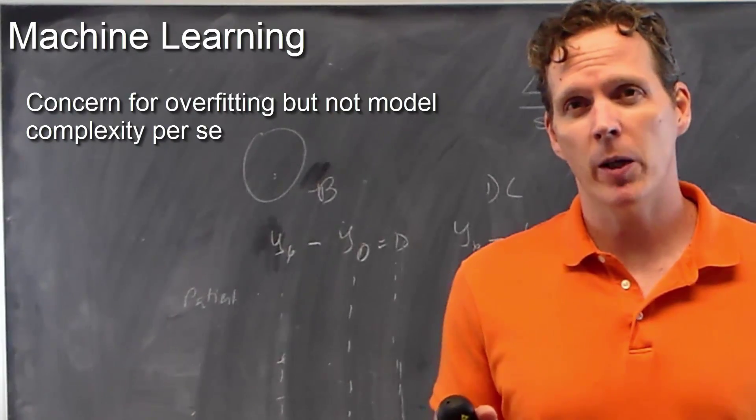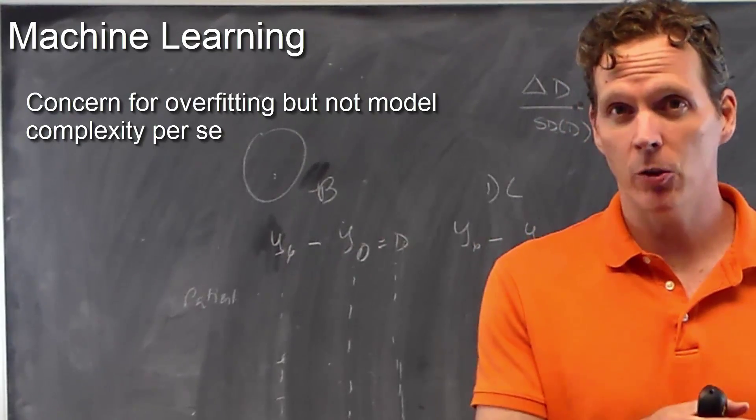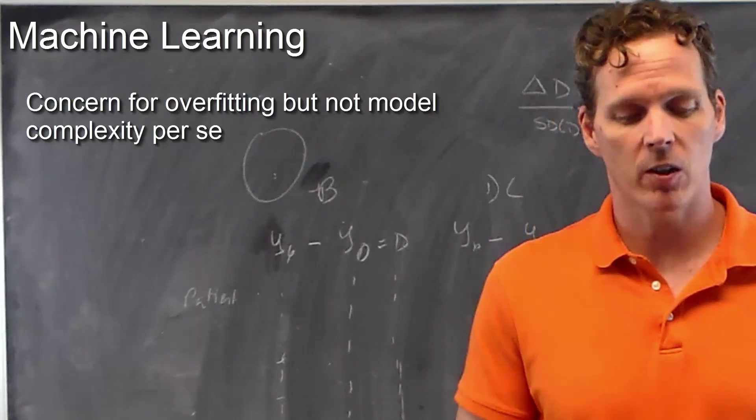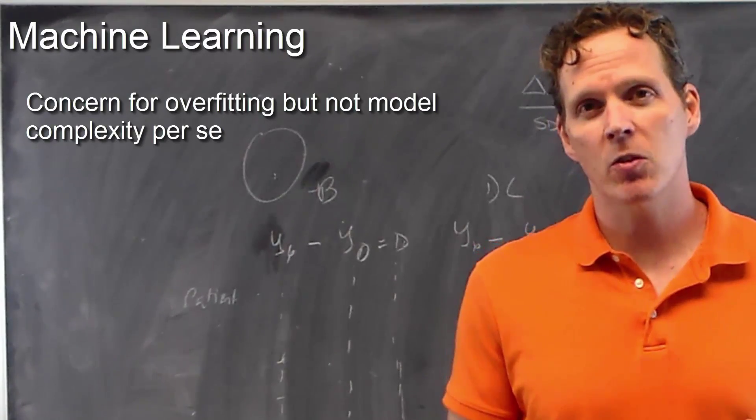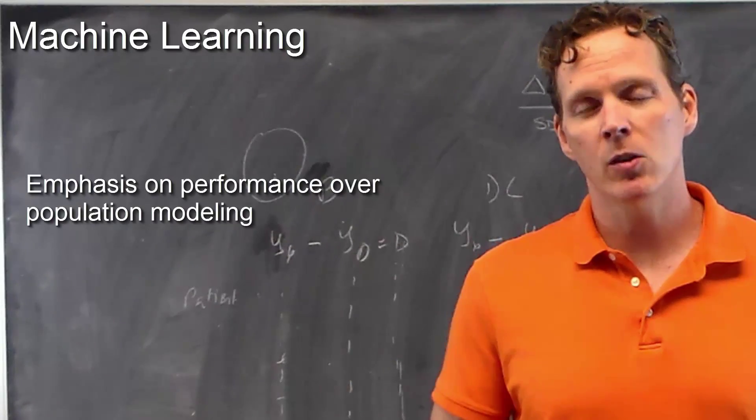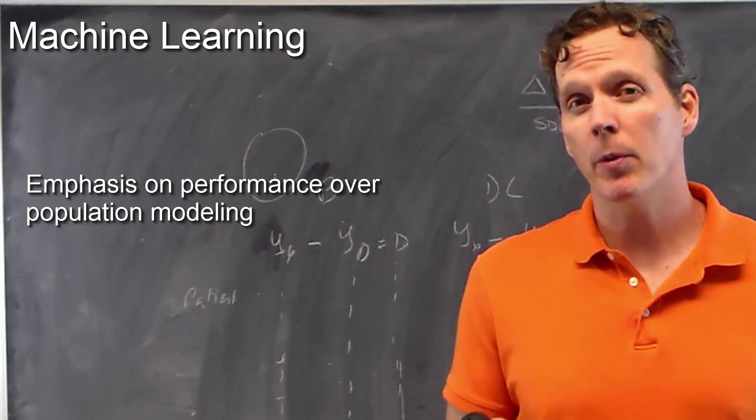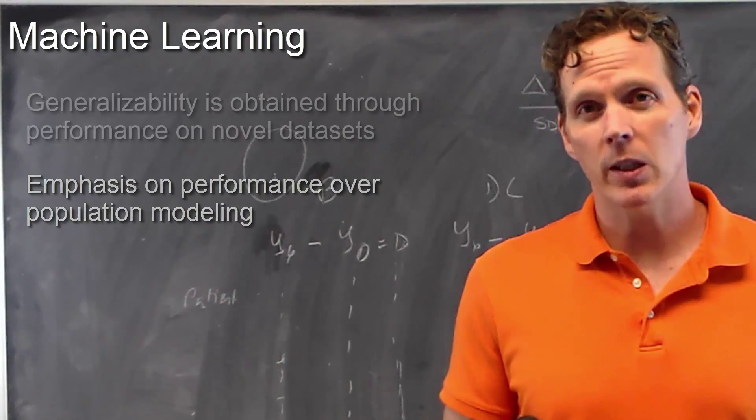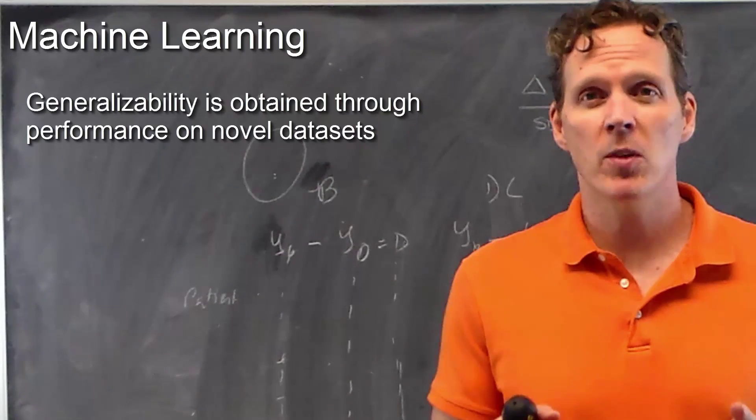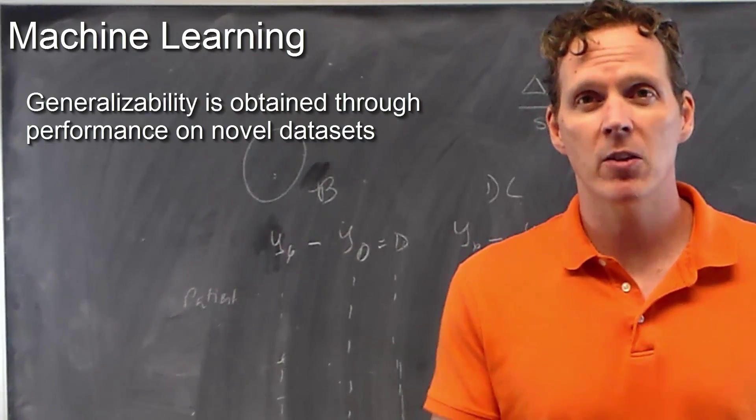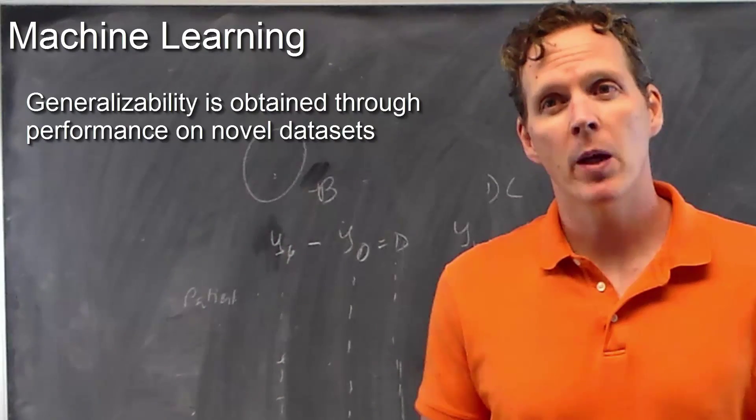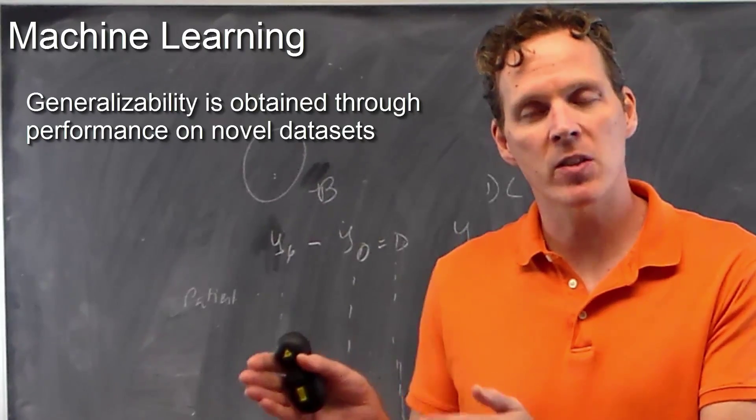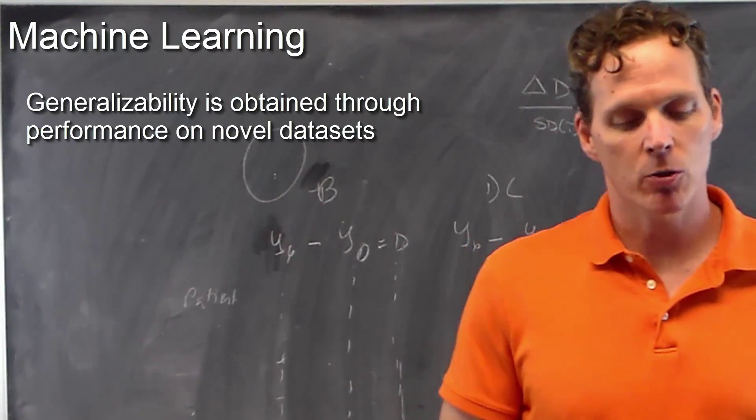If you have a highly complex model that's not overfitting and yielding good predictions, then there's more of a tolerance for that in the field of machine learning than there is in the field of traditional statistics. There's an emphasis in machine learning on performance, and less of an emphasis on superpopulation models and generalizability that occurs a lot in statistics. Generalizability in machine learning tends to be obtained by applying the algorithm on novel data sets where you know the outcome and checking to see how good your predictions are, rather than on modeling and sampling assumptions that often occur in traditional statistics.